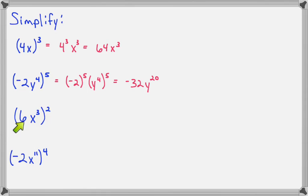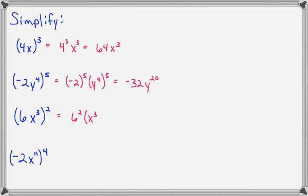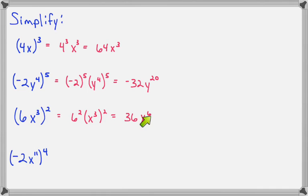Third example: 6x to the third all raised to the second. This gives us 6 to the second power and x to the third to the second power. So 6 squared will be 36, and x to the third squared will be x to the sixth, because 3 times 2 is 6.